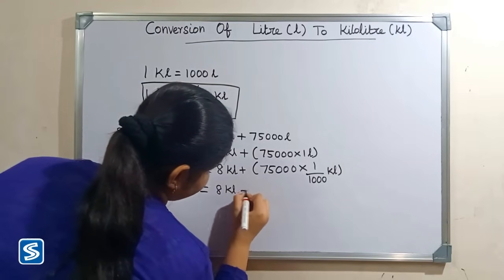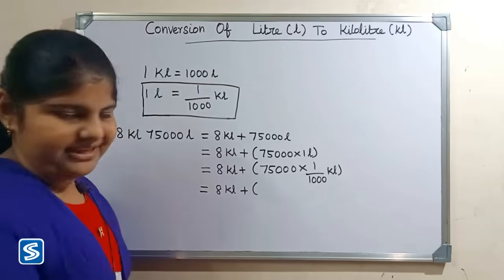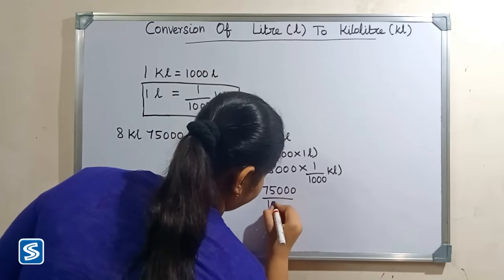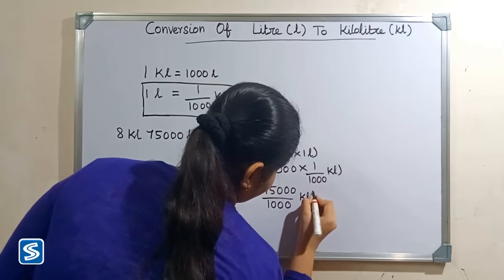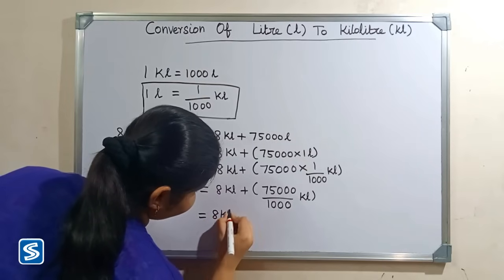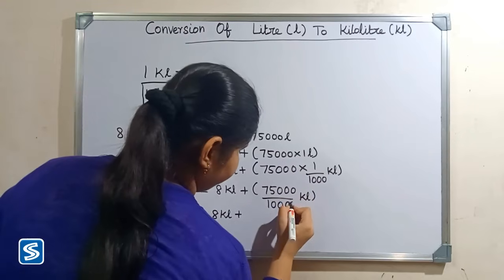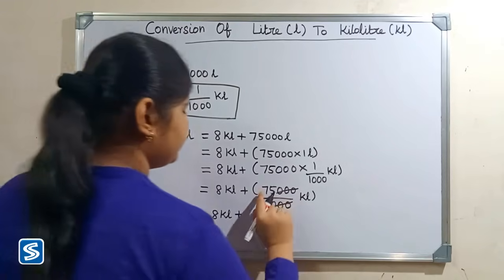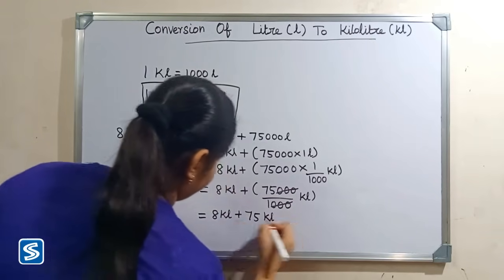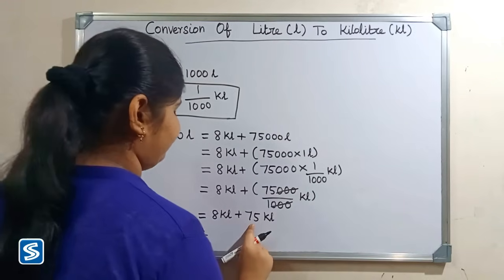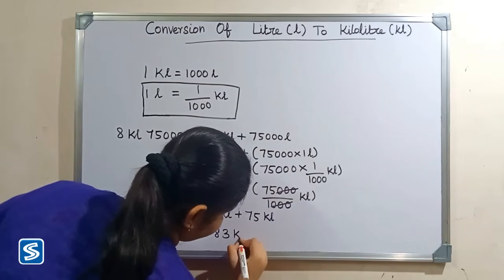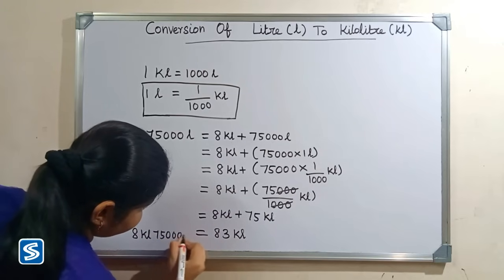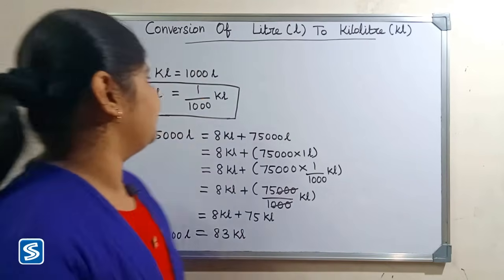So we get 8 kiloliters plus 75,000 multiply one, which is 75,000, divided by one thousand kiloliters. The zeros get cancelled, so when we divide 75,000 by one thousand kiloliters our answer is 75 kiloliters. So 8 kiloliters plus 75 kiloliters equals 83 kiloliters. Therefore 8 kiloliters 75,000 liters is equal to 83 kiloliters.